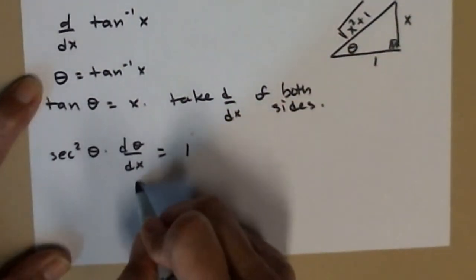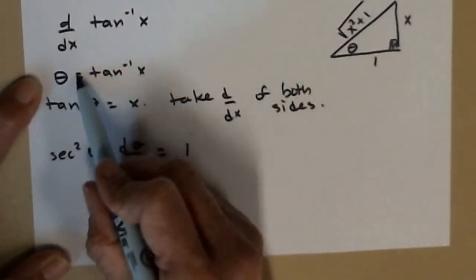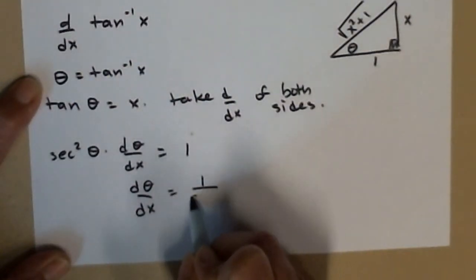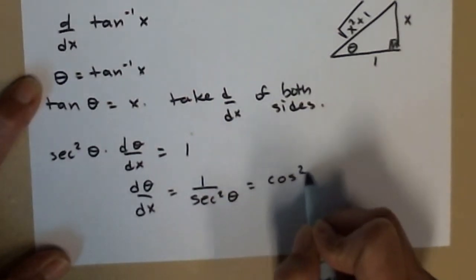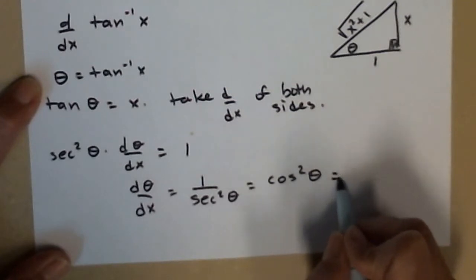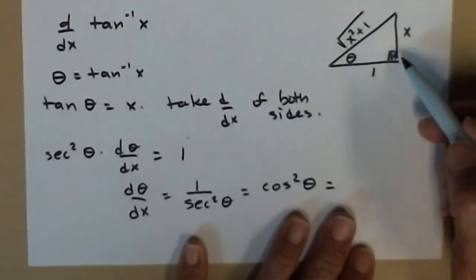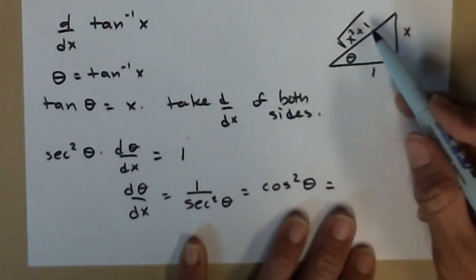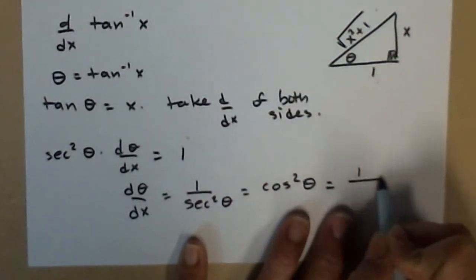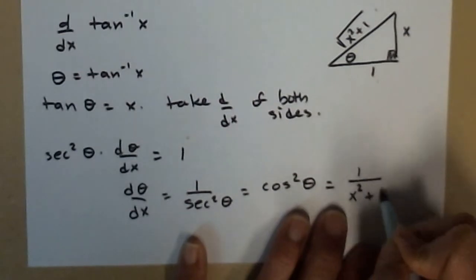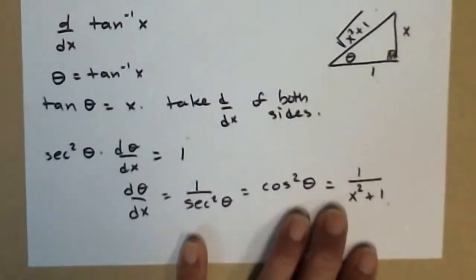Solve for dθ/dx, because that's the derivative of my inverse tangent. So 1 over secant squared theta, also known as cosine squared theta. And cosine squared of theta, if I come back up here to my triangle, cosine is adjacent over hypotenuse. And I'm squaring them, so 1 squared over the radical squared. And that is the derivative of theta, which is the inverse tangent. So the derivative of inverse tangent is 1 over x squared plus 1.